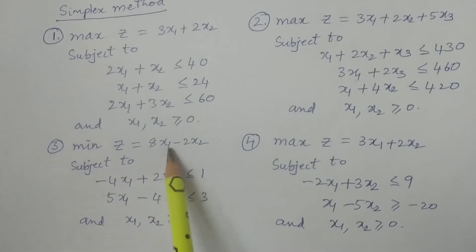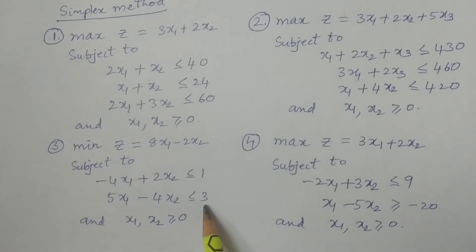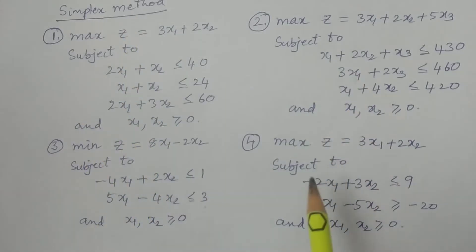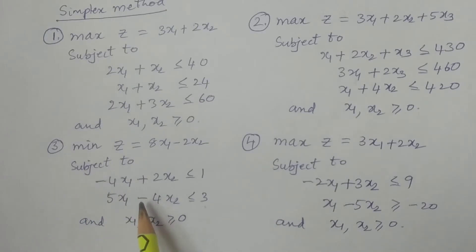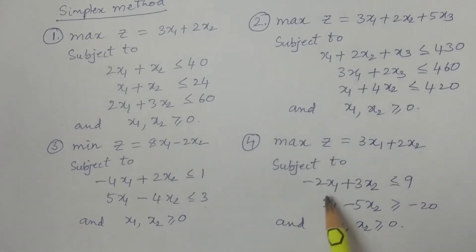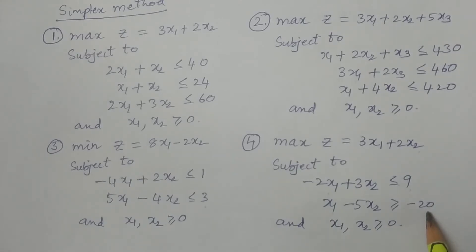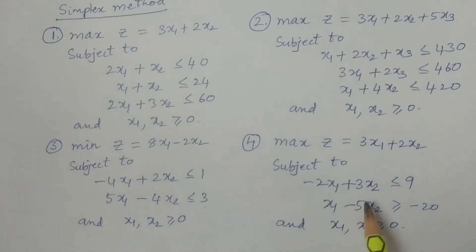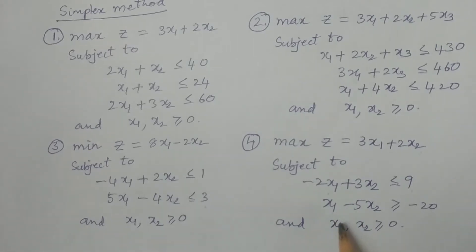Problem 3 is a minimization problem: minimize z = 8x1 − 2x2, subject to −4x1 + 2x2 ≤ 1 and 5x1 − 4x2 ≤ 3. Many students think that in the simplex method only maximization problems are given — no, minimization problems are also there. Problem 4 is maximization: maximize z = 3x1 + 2x2, subject to −2x1 + 3x2 ≤ 9 and x1 − 5x2 ≥ −10. The solution to this problem will be unbounded, so you also have to handle unbounded solution problems in the simplex method.